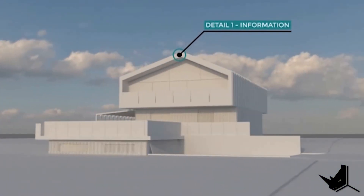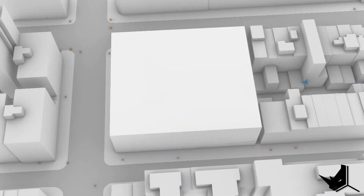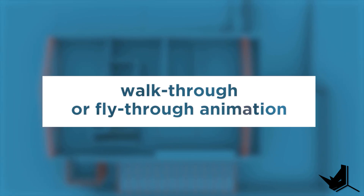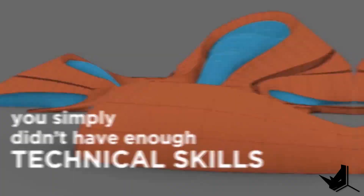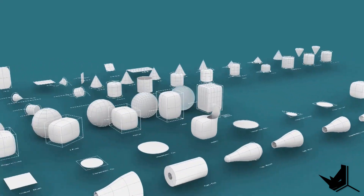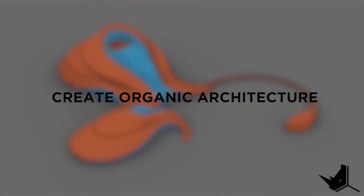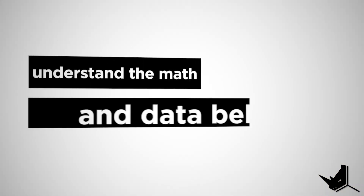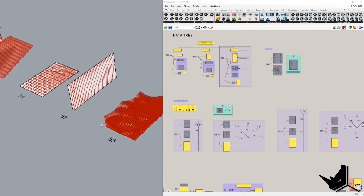Quick announcement: if you're interested in a structured step-by-step learning approach with personal one-on-one support 24x7 and homework exercises, feel free to send an application for our Rhino for Architects online course and schedule your call with us. The course covers various topics like parametric modeling with Grasshopper, fluid modeling with Sub-D, architectural visualization, animation, presentation techniques, and way more. We currently have a couple of available spots, so apply today.